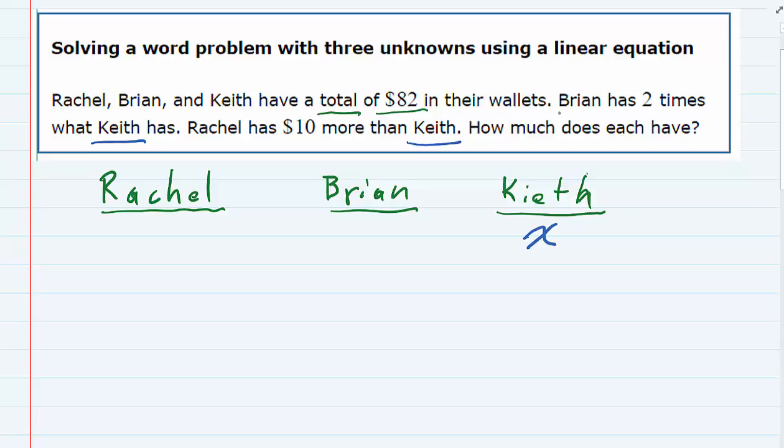We know that Brian has two times what Keith has. So if Keith has X, then Brian will have 2X. And we're told that Rachel has $10 more than Keith. So if Keith is X, Rachel is X plus 10. She has $10 more.